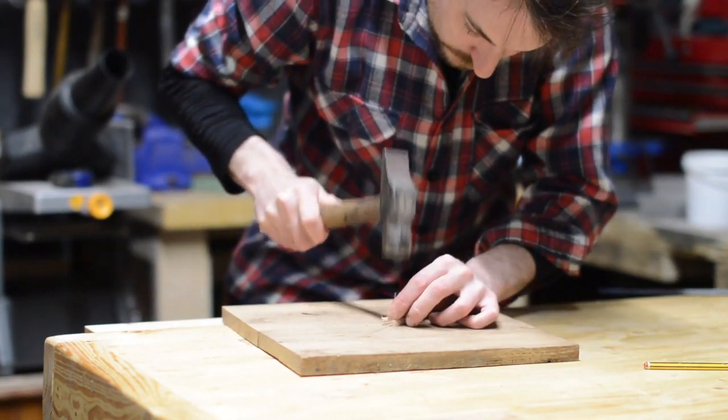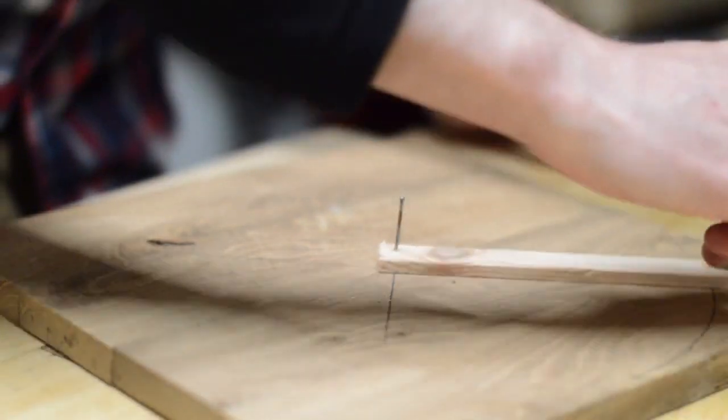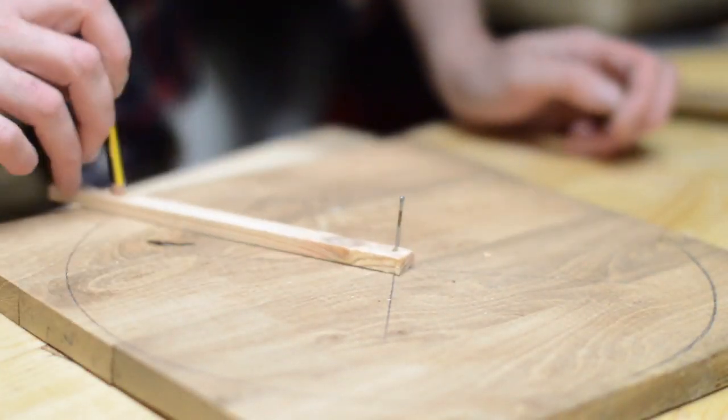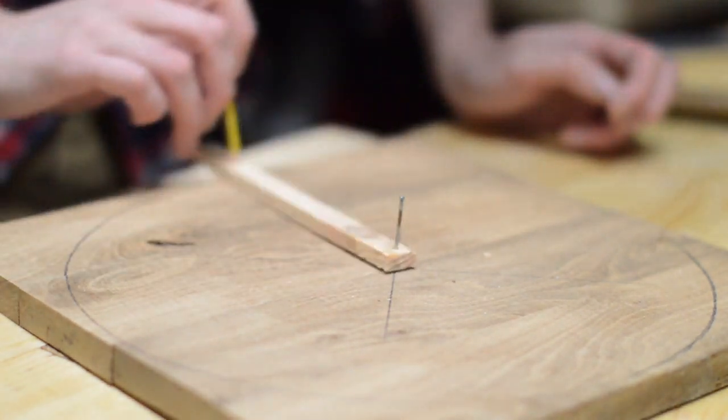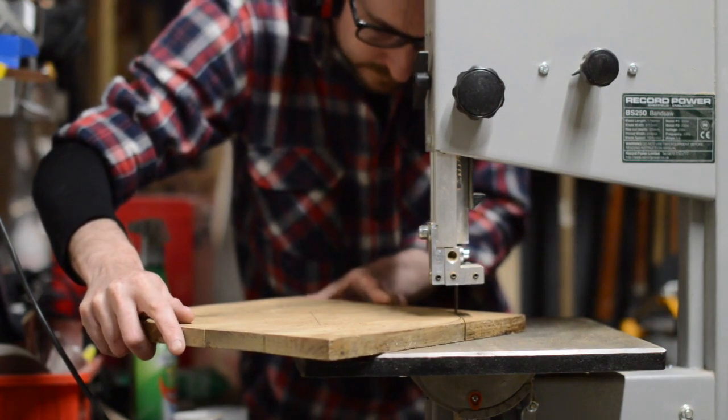The top was going to be circular. So to mark out the circle I knocked up this little tool that I call a stick with a hole in it. I didn't have a compass quite big enough but a bit of string would work just as well. With it marked out I can move on to a slightly more high-tech machine.